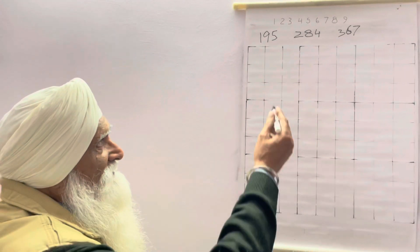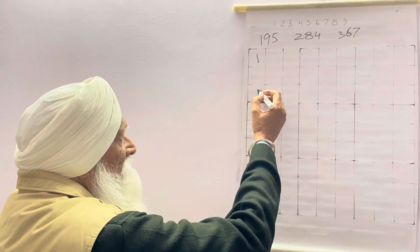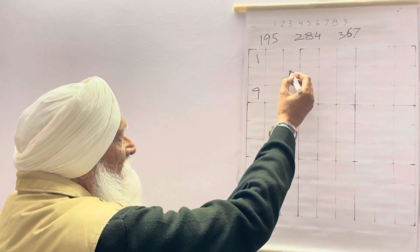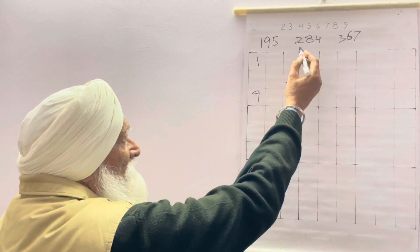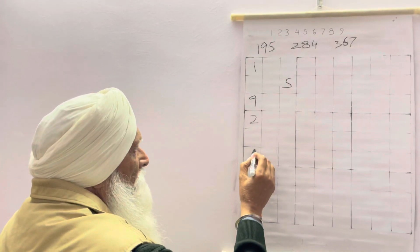So I will start placing these numbers in different blocks. First we come here: 1, 9, and 5. Second group in the second block: 2, 8, 4.